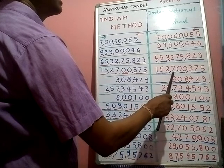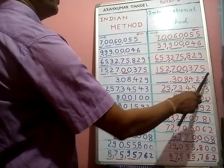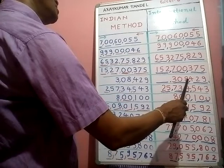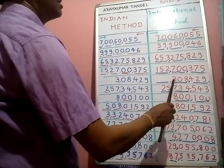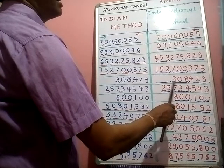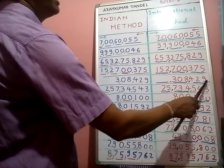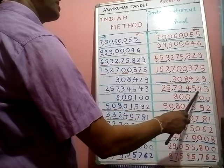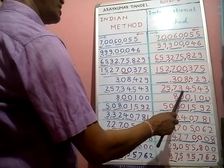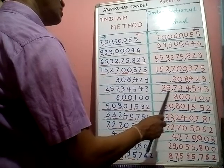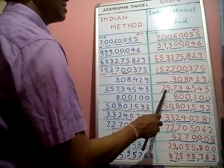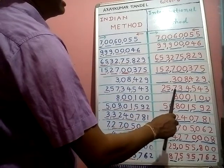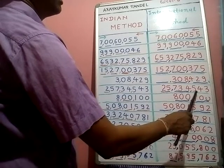Next one — ones, tens, hundreds, thousands, ten thousands, hundred thousands. We read: three hundred eight thousand four hundred twenty-nine. Next one — ones, tens, hundreds, thousands, ten thousands, hundred thousands, millions, ten millions. We read: twenty-five million seven hundred thirty-four thousand five hundred forty-three.